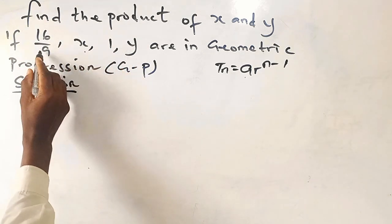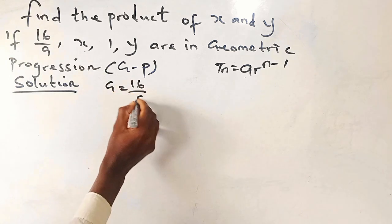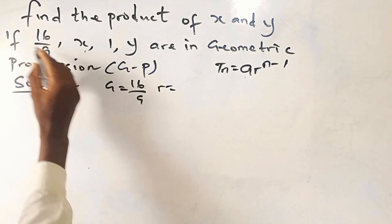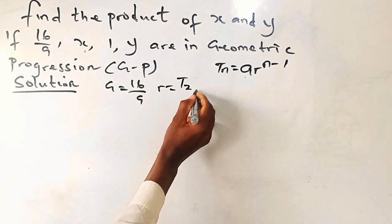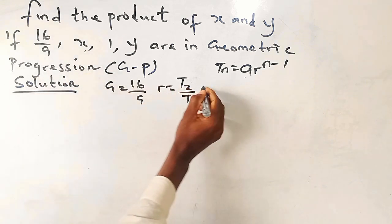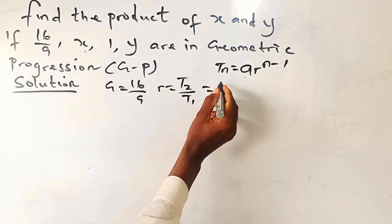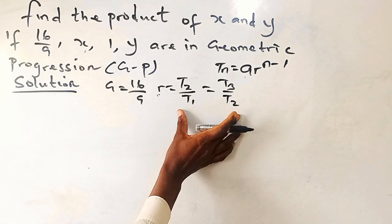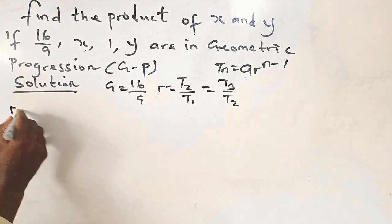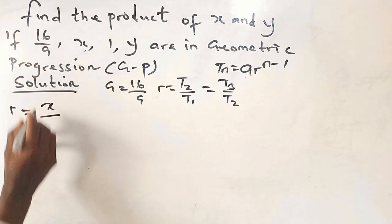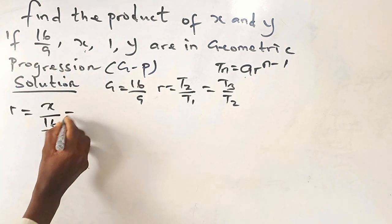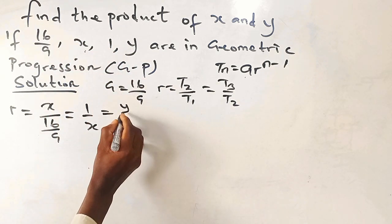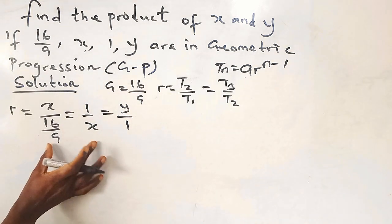How do we apply this to resolve x and y? The first term is 16 over 9. The constant ratio is found by dividing the second term by the first term — t2 over t1 — and similarly t3 divided by t2, and so on. So to determine r, we say x divided by 16 over 9 equals 1 over x, which also equals y over 1.